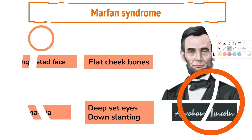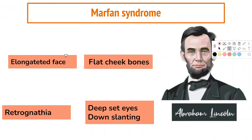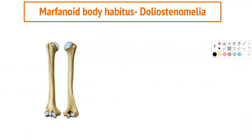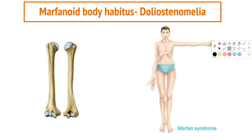The typical facial features observed in Marfan syndrome include an elongated face, flat cheekbones, and a posteriorly positioned jaw, also known as retrognathia, deep-set eyes, and down-slanting palpebral fissures. Abraham Lincoln had features of this — but did he have Marfan syndrome?